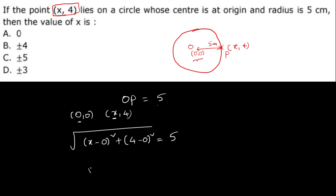Now root of x minus 0 squared plus 4 minus 0 squared, which is 16, equals 5. Squaring both sides, x square plus 16 equals 5 square, so x square plus 16 equals